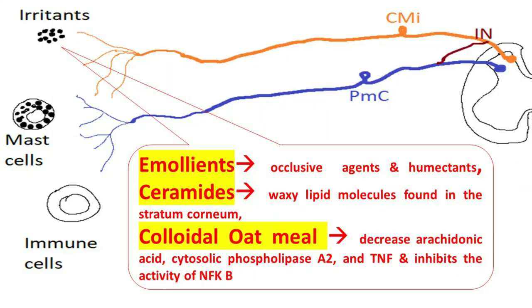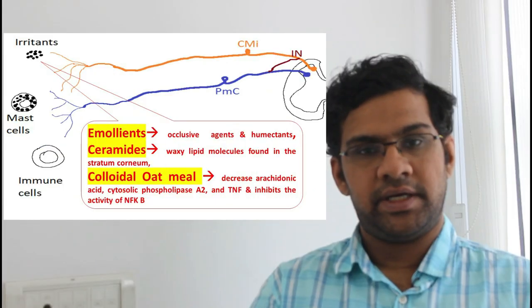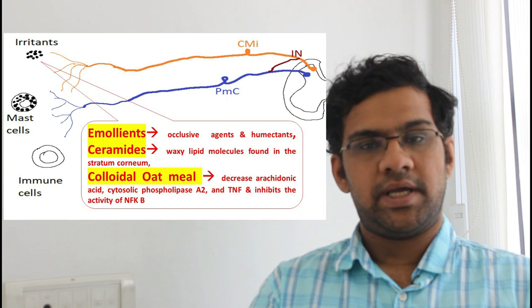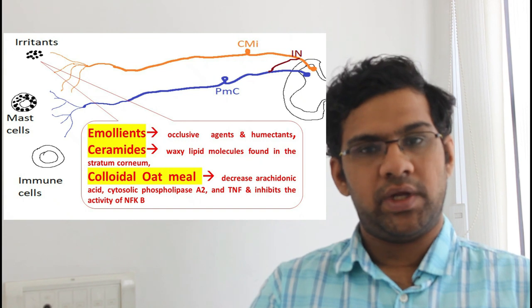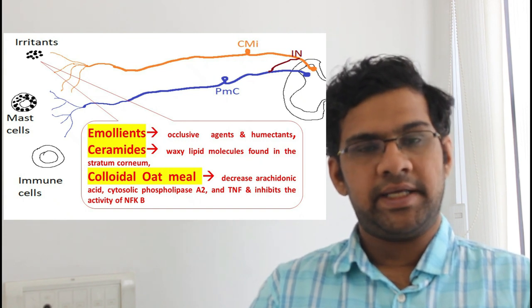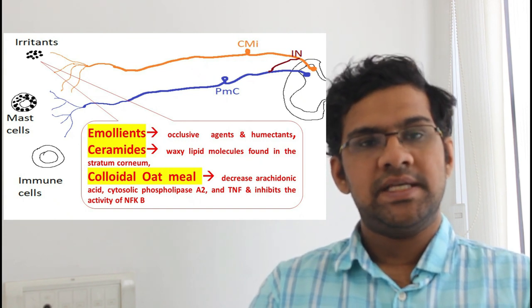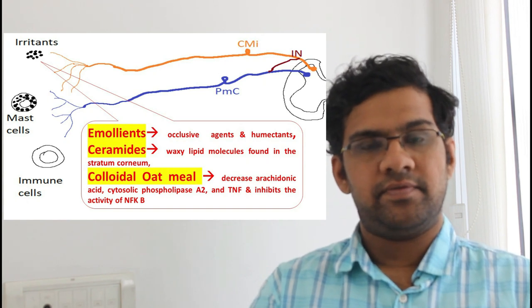The first substances which we use for treating itch are emollients. Emollients help in maintaining the barrier function of the skin, thereby decreasing the penetration of the irritants. Most commonly used emollients are occlusive agents like liquid paraffin and humectants like urea.